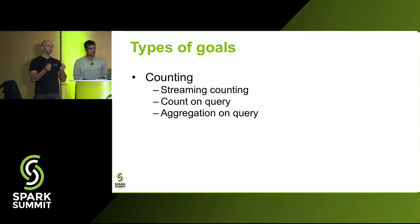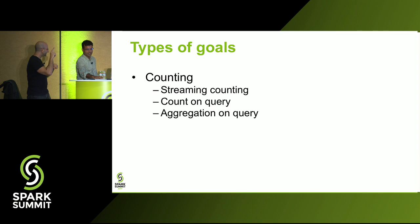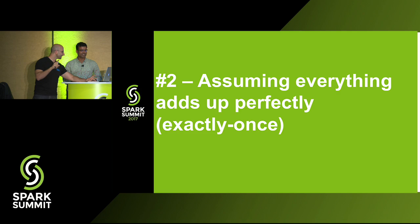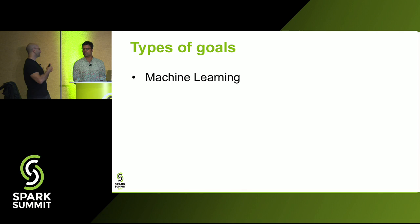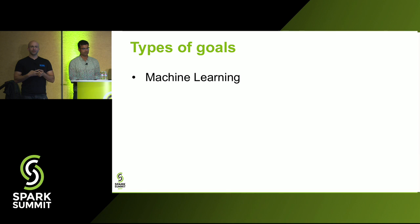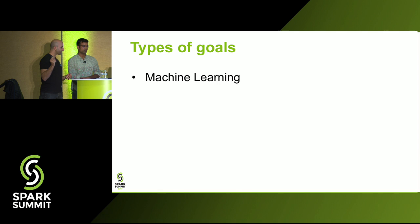Counting — this is where Spark Streaming shines. A complex Spark Streaming application is really good for counting. Machine learning: Spark has a good framework for machine learning, and ML can run during a streaming process, which is valuable. MLlib could use some polish and additional features, but it has a good framework.